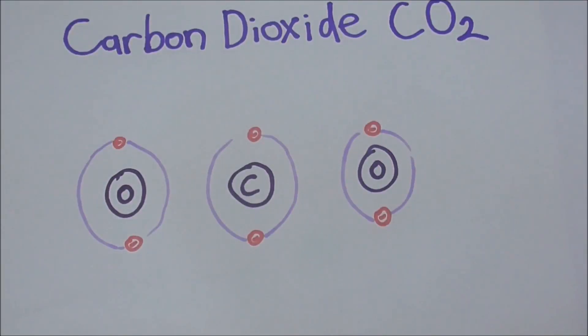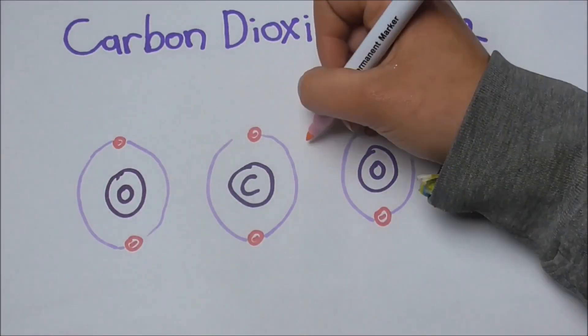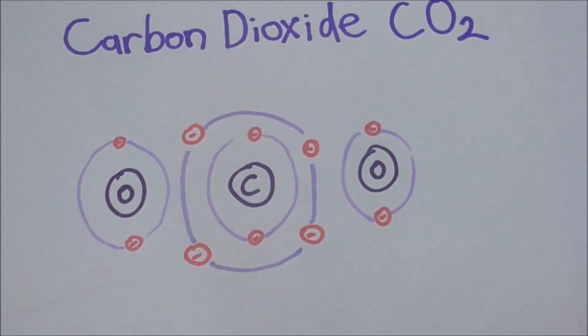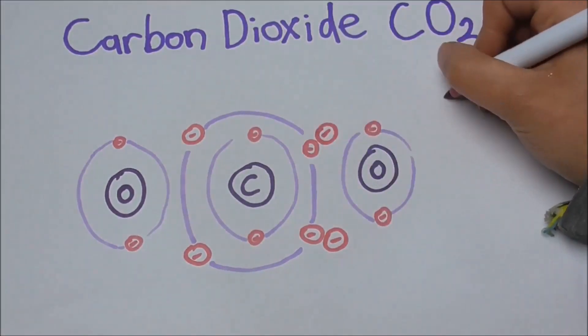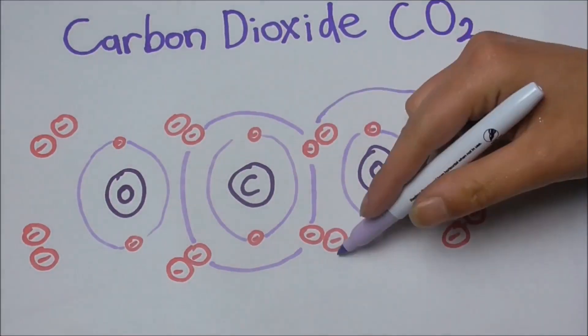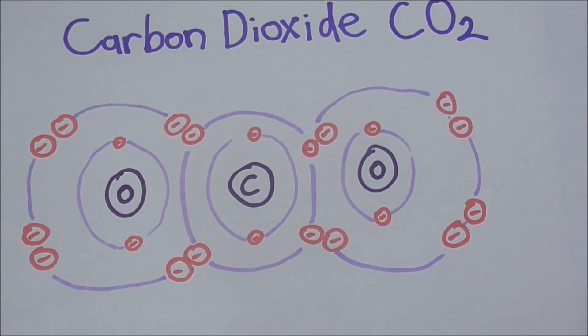So carbon usually wants to find another four to complete its outer shell, and oxygen needs to find another two to complete its outer shell. So when you get one carbon and two oxygens, when they share the electrons, they all have eight in their outer shell.